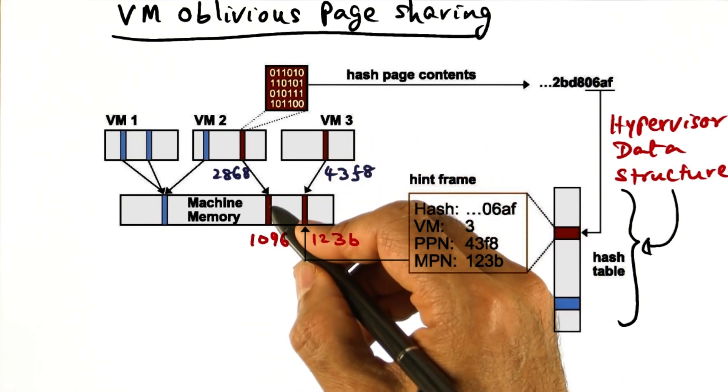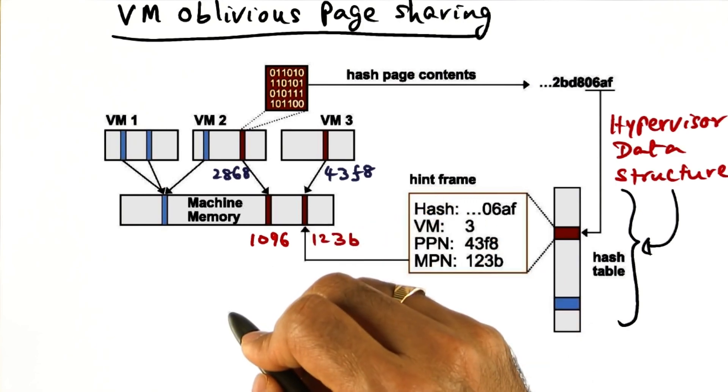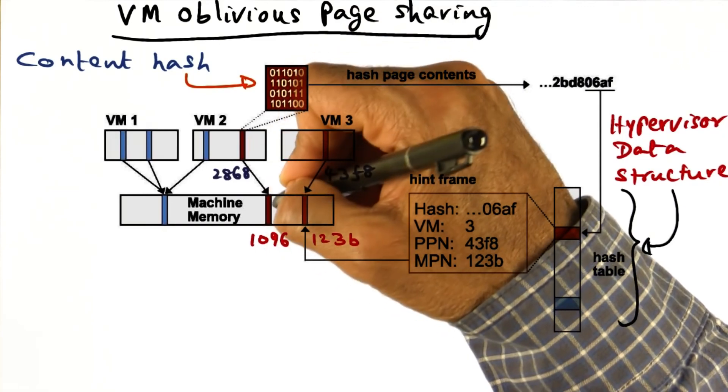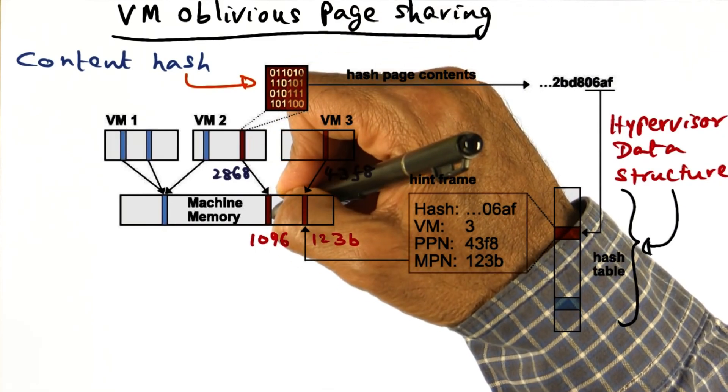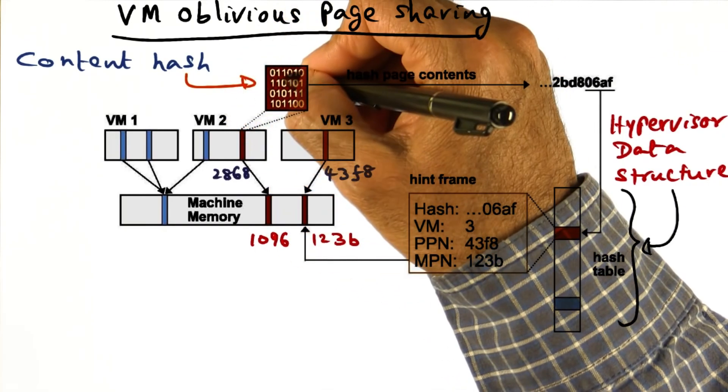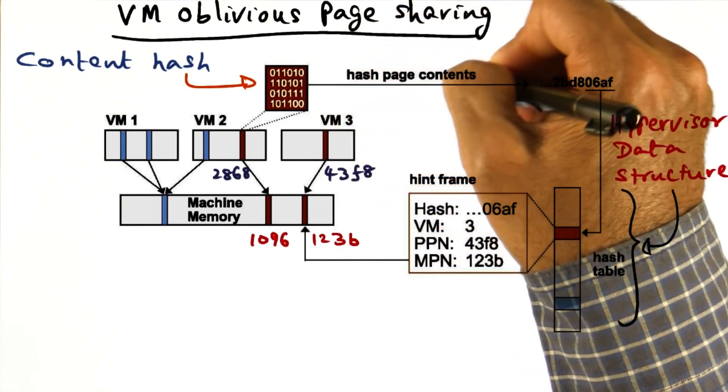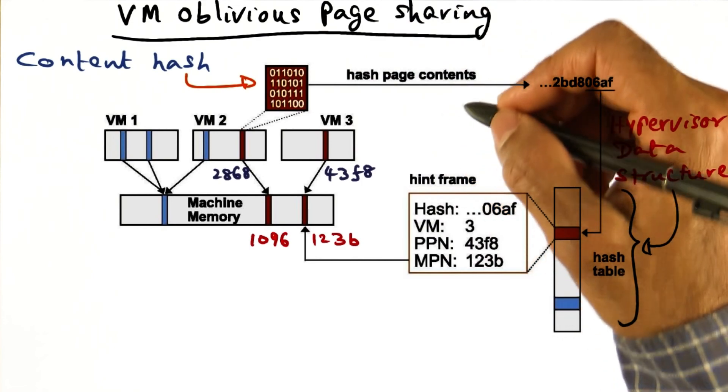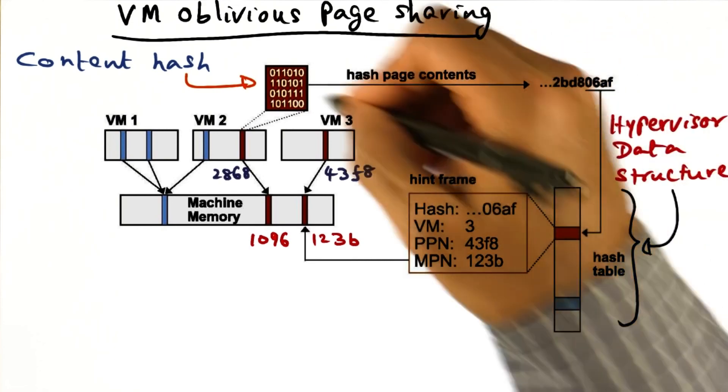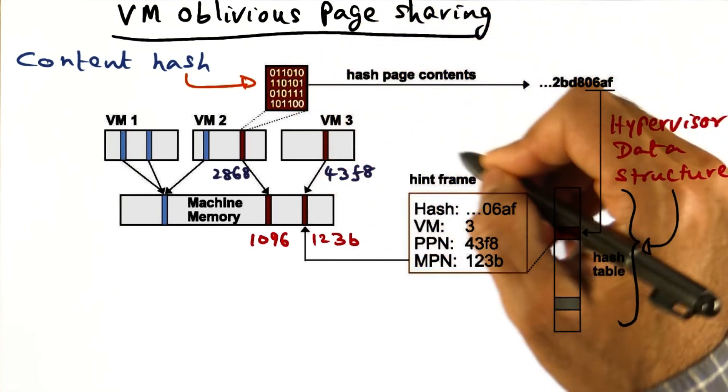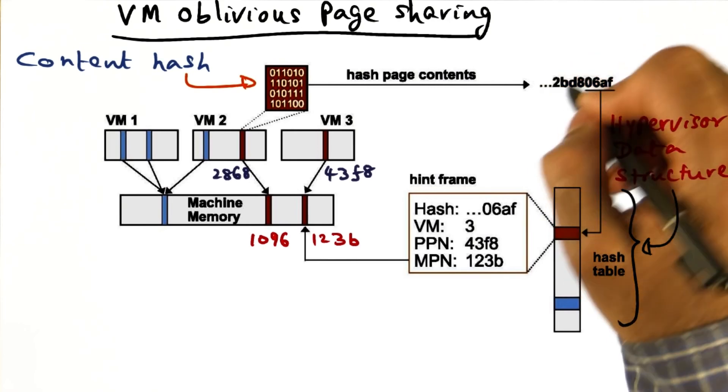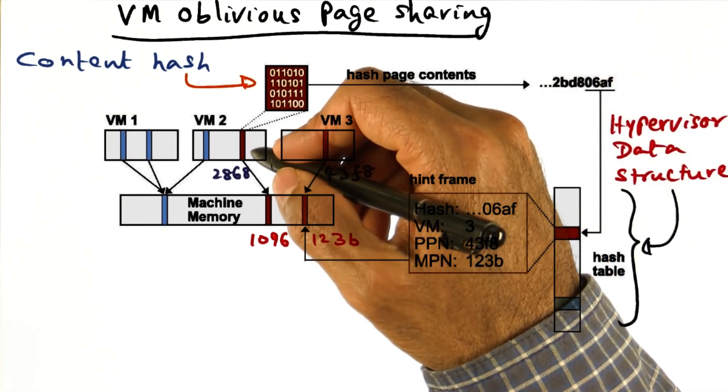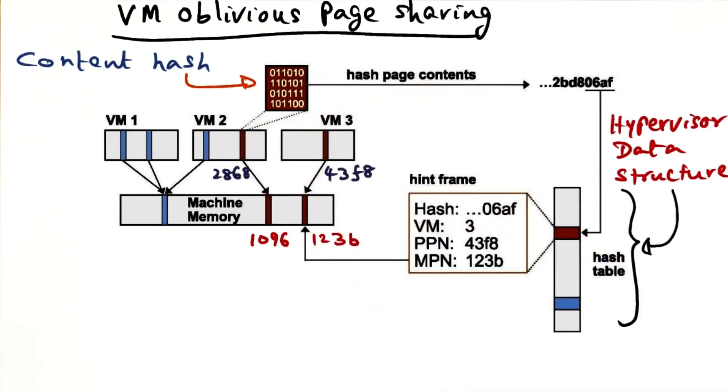So how do we find that out? What we do is we take the contents of this machine page 1096, create a content hash. That's a particular algorithm that the hypervisor is going to run to create a content hash. So we create a content hash for this page 1096 that corresponds to PPN 2868 of VM2.